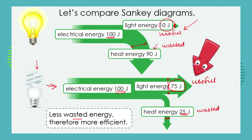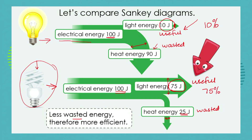We can say that the old-fashioned filament light bulb is 10% energy efficient. However, the new energy saver light bulb is 75% energy efficient. Less energy wasted means more efficient. This is why there's a move to replace old-fashioned filament light bulbs with energy savers.